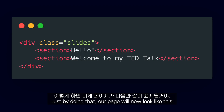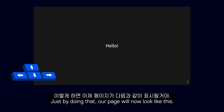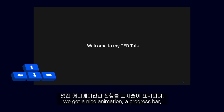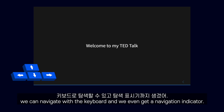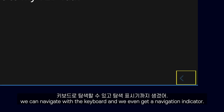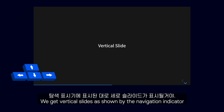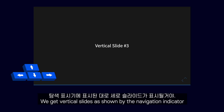Just by doing that, our page will now look like this. Each section has become a slide. We get a nice animation, a progress bar, we can navigate with the keyboard, and we even get a navigation indicator. If we add sections inside of a section, we get vertical slides as shown by the navigation indicator.